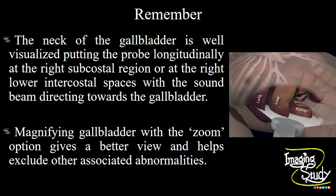The take-home message: the neck of the gallbladder is well visualized by putting the transducer longitudinally at the right subcostal region or right lower intercostal spaces, with the sound beam directing towards the gallbladder. This is an excellent technique to evaluate the neck of the gallbladder and to exclude the presence of any stone at that point. Magnifying the gallbladder with the zoom option of your machine gives a better view and helps exclude other associated abnormalities like polyp or mass.